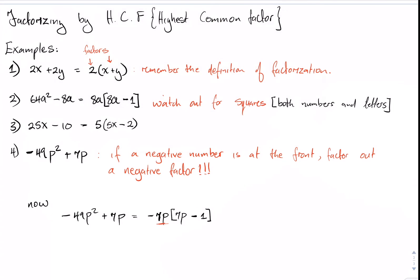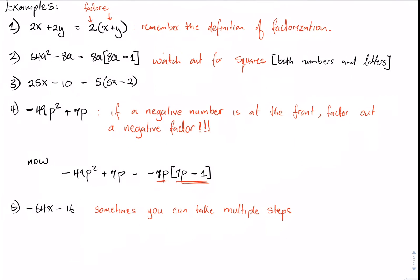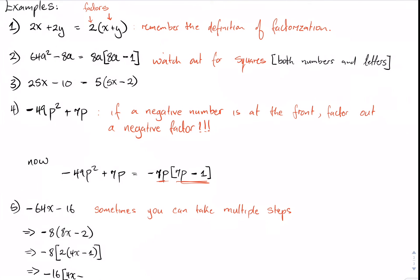Example five: negative 64x minus 16. Sometimes you can take multiple steps when factorizing — it doesn't have to be done in one step. We recognize that negative 8 is common in both terms. Factoring out negative 8 gives us negative 8 times 8x minus 2, which equals negative 8 times 2 times 4x minus 1, which equals negative 16 times 4x minus 1. We could have done this in one step by recognizing that 64 divided by 16 equals 4.